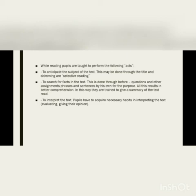While reading, pupils are taught to perform the following acts: to anticipate the subject of the text, which may be done via the title and skimming or selective reading; to search for facts in the text using guiding questions and segmented phrases and sentences. All these result in better comprehension. In this way they are trained to give a summary of the texts read and to interpret the text, for which pupils have acquired the necessary habits.